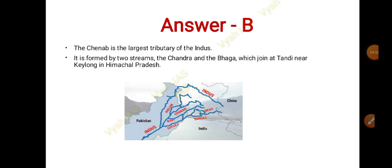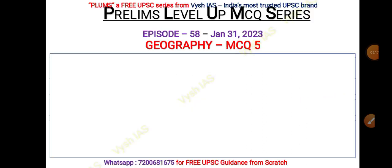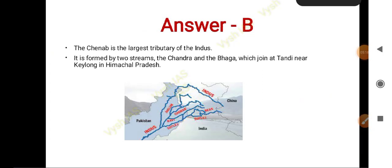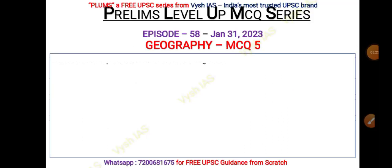This is clearly given in the NCERT, so you must be knowing it. Chenab is formed by two streams — Chandra and Bhaga — which meet at Tandi near Keylong in Himachal Pradesh and come to be known as Chandrabhaga, and then it becomes Chenab. So Chenab is the largest tributary of the Indus River system.